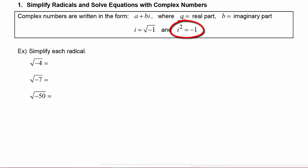This is the big difference between the real number system, which is what we've been using all semester up until this point, and the complex number system. In real numbers, the square of something could never be negative, but in complex numbers, i squared is negative one.